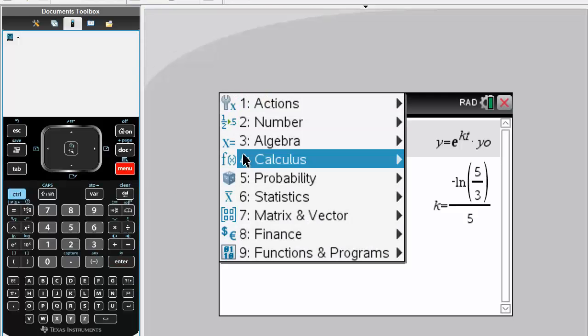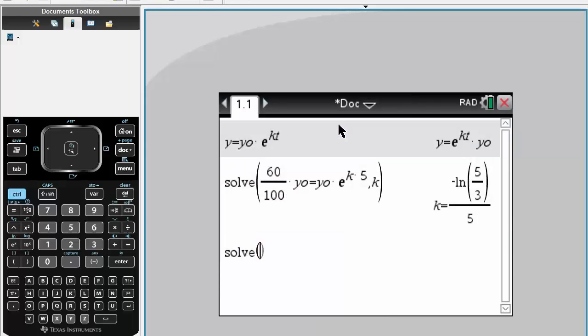So we'll hit menu, algebra, solve. In our case, half-life is 50 over 100 of the original amount, so that's one half. So we need to control divided by two.